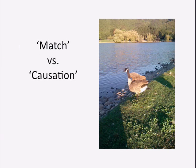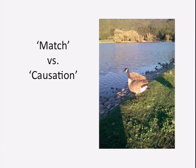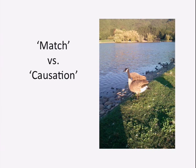There are two models of what makes a photograph a photograph of a particular object. One is: it's a photograph of whatever best matches the photo. The other is: it's the thing that caused the photo to be the way it is. It's harder for paintings. If I want to make a painting of Elvis and Elvis is sitting there as my model, then even if it comes out not looking much like Elvis, it's still a painting of Elvis — not a good painting, but a painting of Elvis nonetheless.